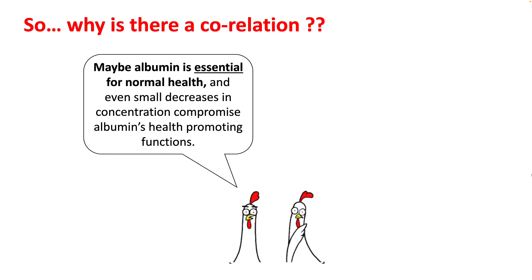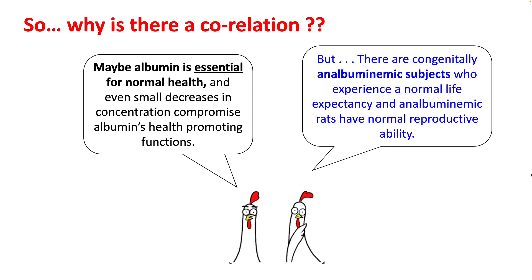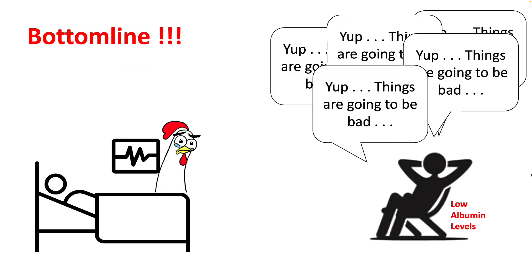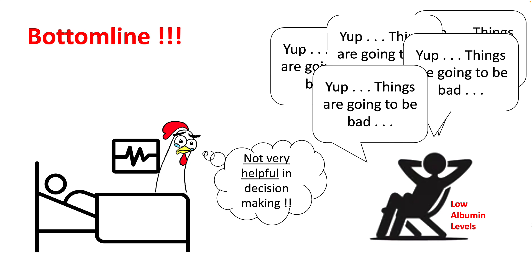So why is there a correlation? The most common explanation is that albumin is essential for normal health and that even a small decrease in concentration can compromise its health-promoting functions. However, there is a group of patients who are completely analbuminemic and experience a normal life. So albumin appears to be simply a surrogate marker for disease, mortality, and morbidity — in other words, albumin level is just a test that can predict that things may go badly for the patient, but intrinsically it is not very helpful in decision making.